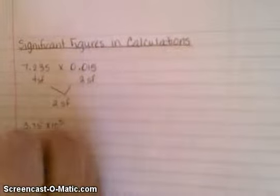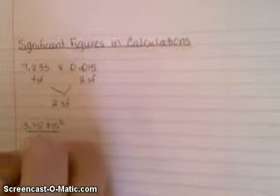Our next example is 3.75 times 10 to the fifth divided by 2.5. Again we need to figure out how many significant figures are in each number. Our top number has three significant figures.